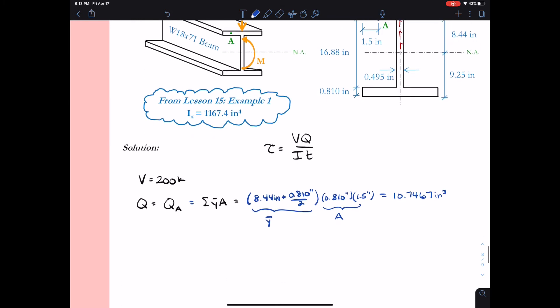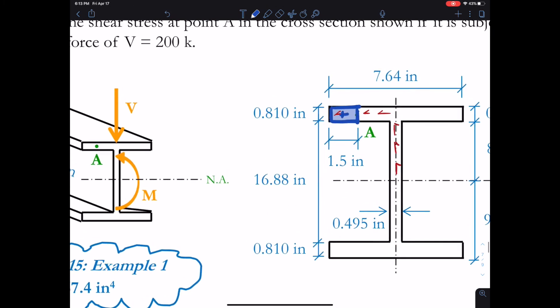Again I like to think at the flange tip the Q would be 0 and then Q reaches a maximum at the neutral axis. So I only want to take the portion from where Q was 0 to the point of interest which is A in my calculation for Q_A.